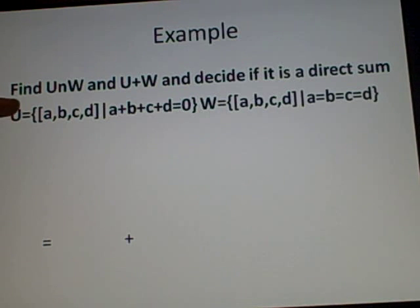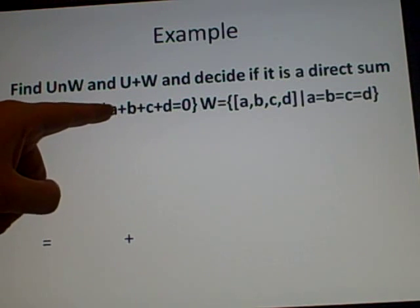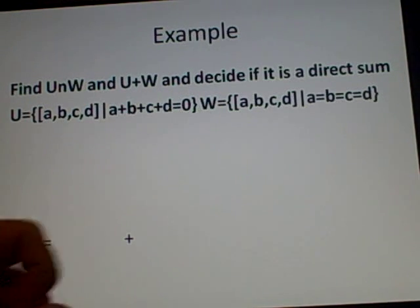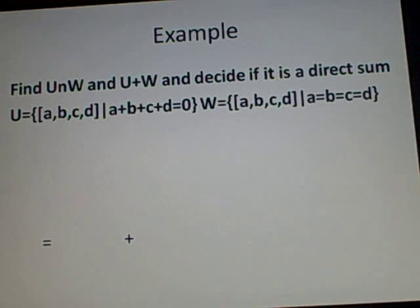So here we have U = {[a,b,c,d] | a+b+c+d=0} and W = {[a,b,c,d] | a=b=c=d}.